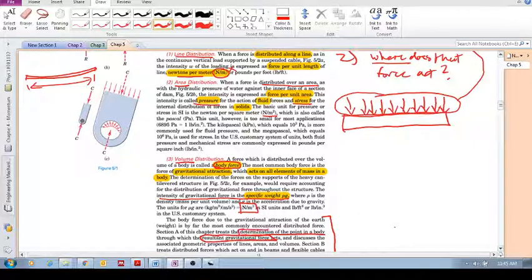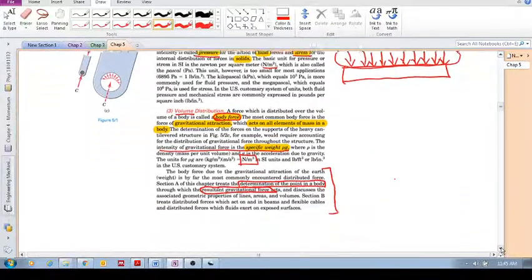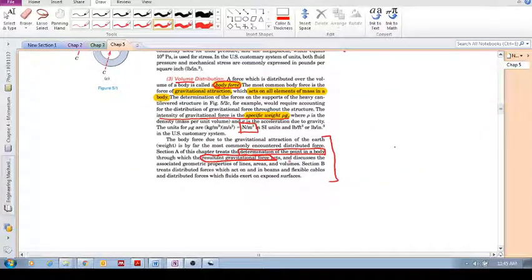Then you need to find a point on the body which has the equivalent effect on the body. And this is called the center of mass. So this is what we're going to look at next. We're going to look at this idea of determining the point on a body through which the resultant gravitational force acts.